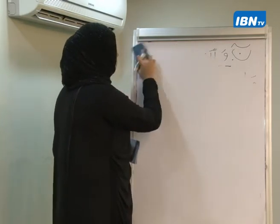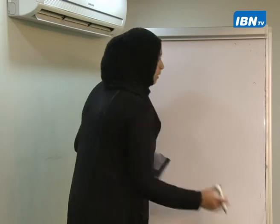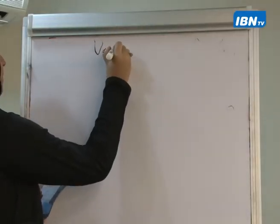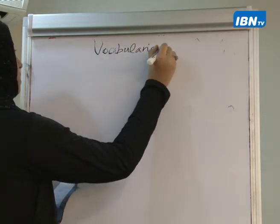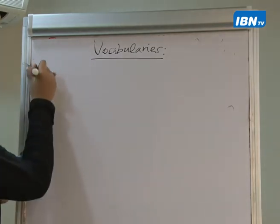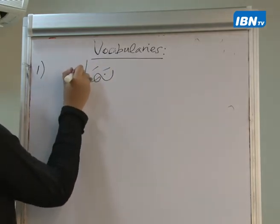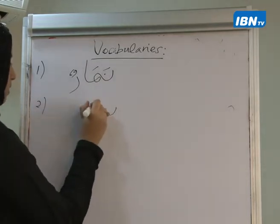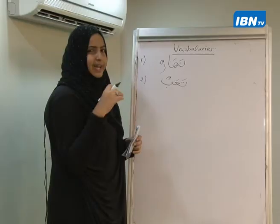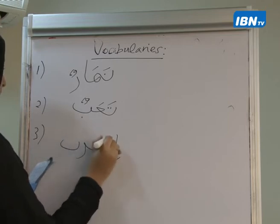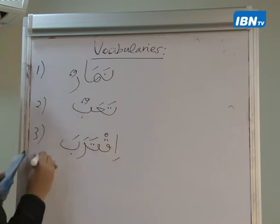From the previous session we had not completed all the vocabularies from the poem — we had 25 and did 10 last time. Today we'll complete the remaining 15. The first words are: Nahar, Ta'abun, Iqtaraba, Gharadun, and Yaghfilu.